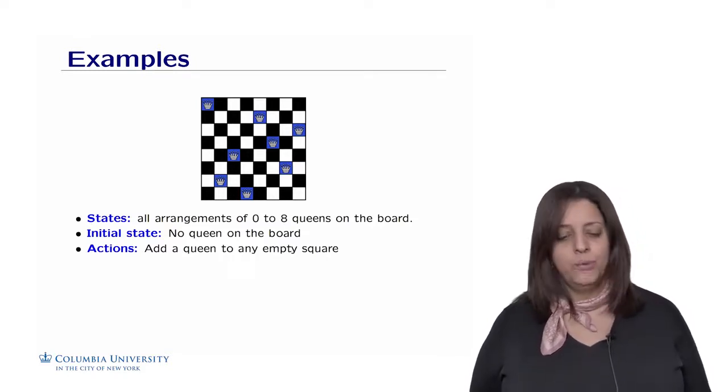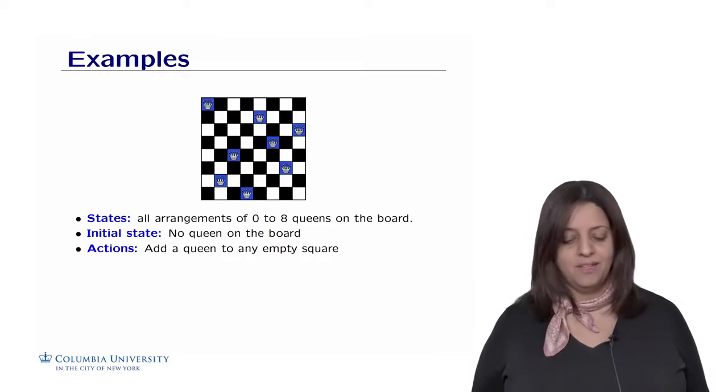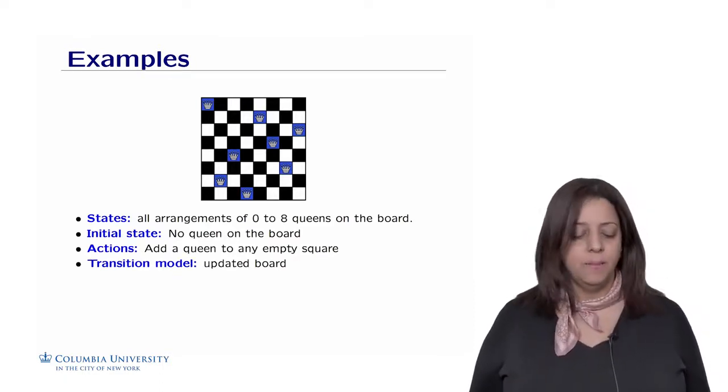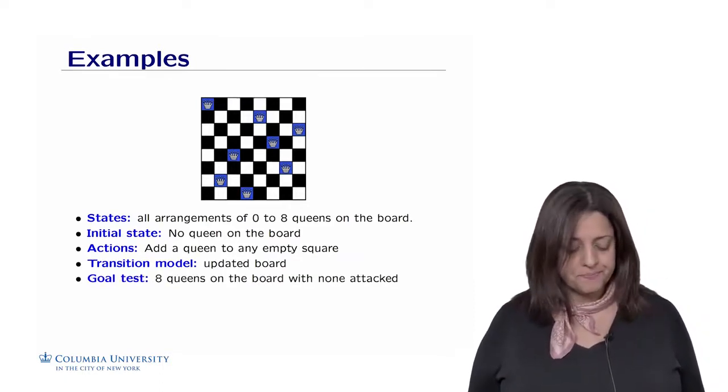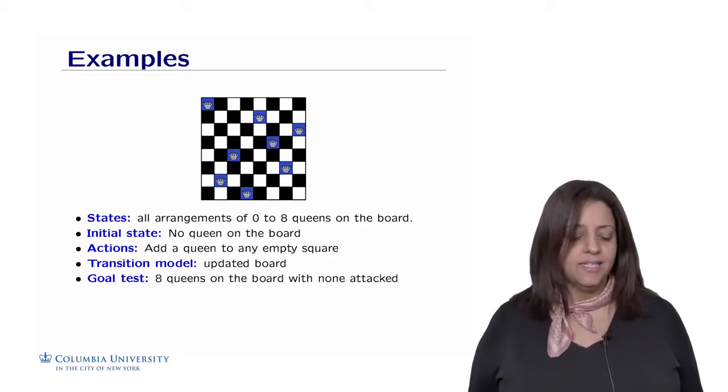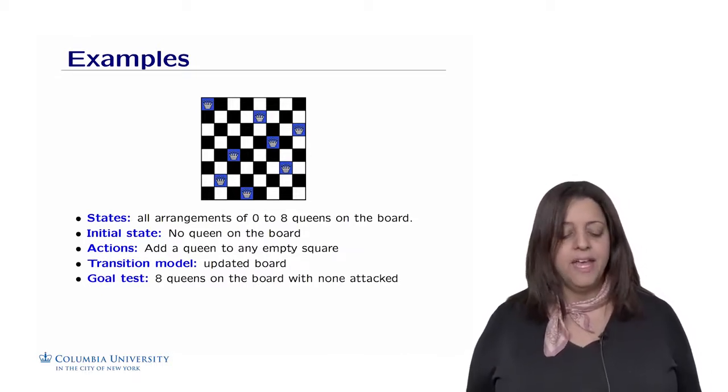You can't, for example, push one queen and replace it by another one. The transition model is the updated board. And finally, the goal test is a test that allows us to say whether the 8 queens on the board, none of them is attacked.